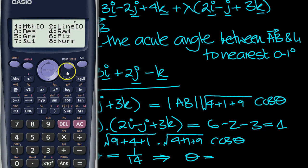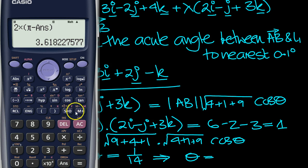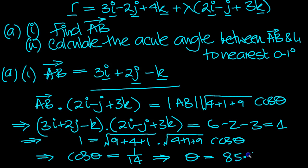So let's go mode, degrees is 3. So shift cos of 1 divided by 14 equals 85.9 to the nearest 0.1 degree. 85.9 degrees. It's acute, 85.9 degrees.